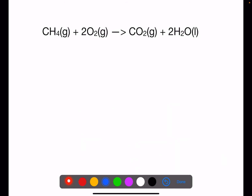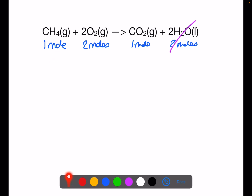We can also use molar volume to compare directly the number of moles of substances in a balanced equation. For this equation, one mole of methane reacts with two moles of oxygen to give one mole of carbon dioxide and two moles of water. If we now just concentrate on the gases, one mole of methane occupies the same volume as one mole of carbon dioxide and one mole of oxygen.